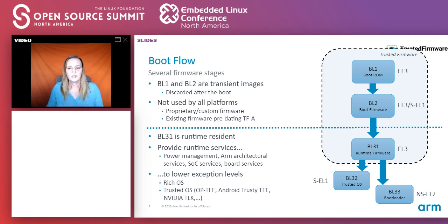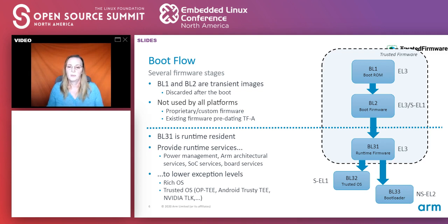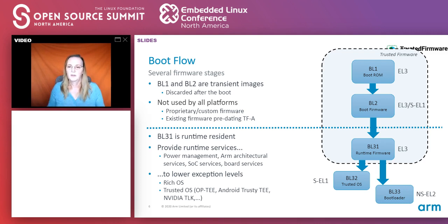Other images outside the TFA project remit include BL32, which is the trusted OS in the secure world, and BL33, which is normally a normal-world bootloader that leads to booting a rich OS like Linux, Android, or a hypervisor. The boot flow also has capacity for more platform-specific images, but that is up to the various platform providers rather than part of the core code.